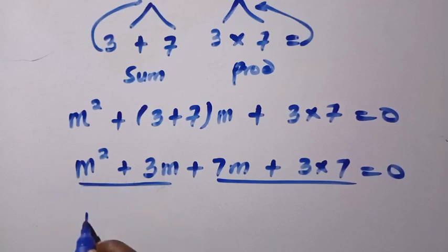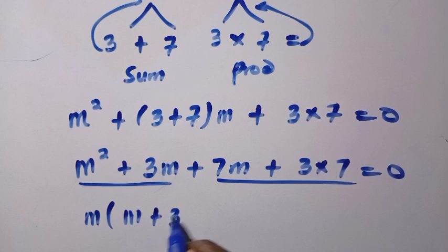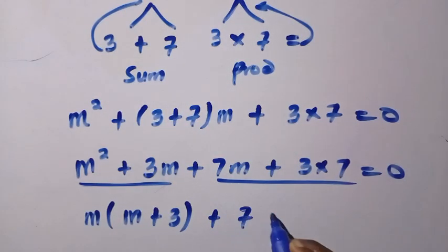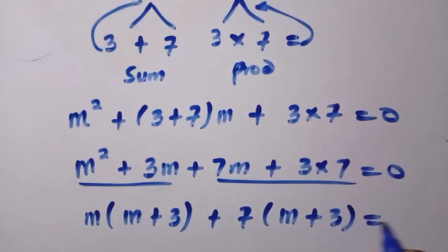So what is common here is m. By factoring out m, we have m plus 3 left in the bracket, then plus, here we have 7. So let's factor out 7. We are left with m plus 3 equals 0.